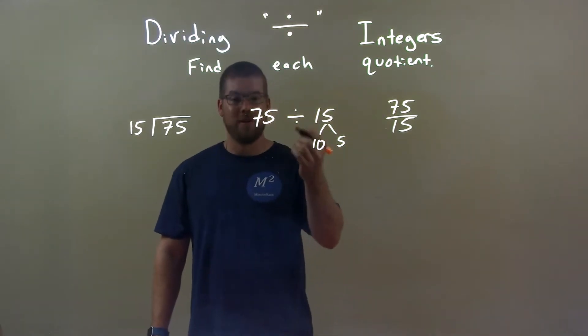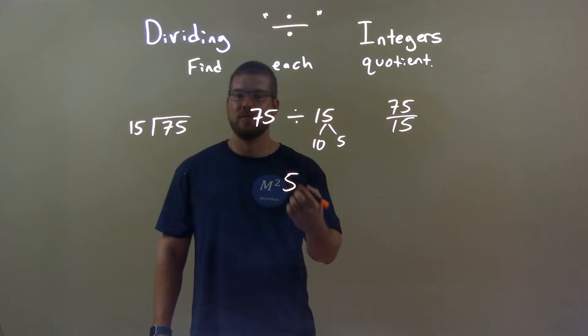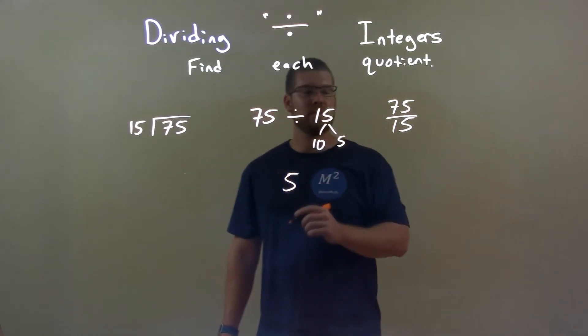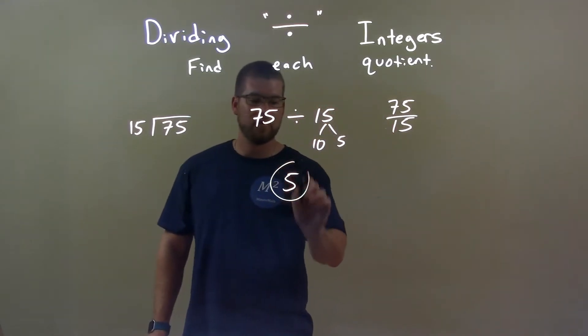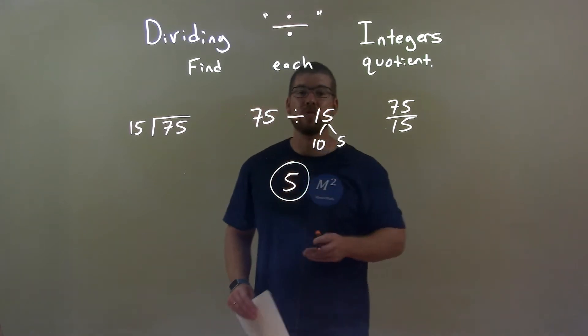So 5 is our answer here. 75 divided by 15 is just 5, and a positive divided by a positive is a positive. So our final answer is just 5.